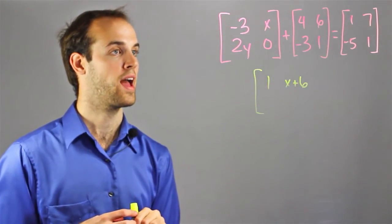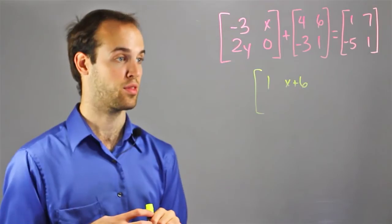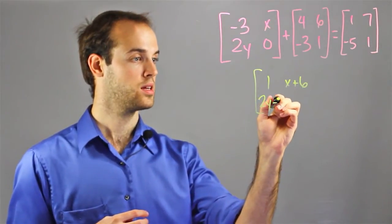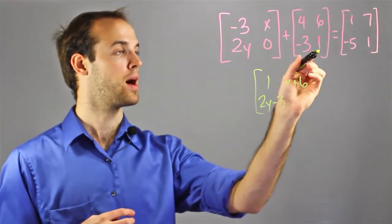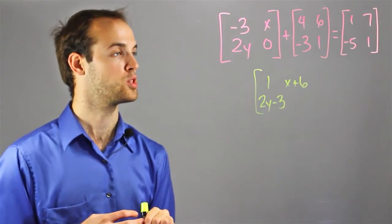In the bottom left corner I have 2y plus negative 3, which is going to be 2y minus 3. And in the bottom right corner I have 0 plus 1, which is 1.